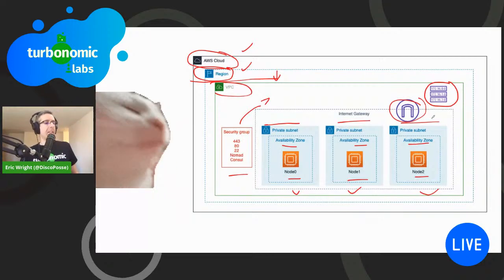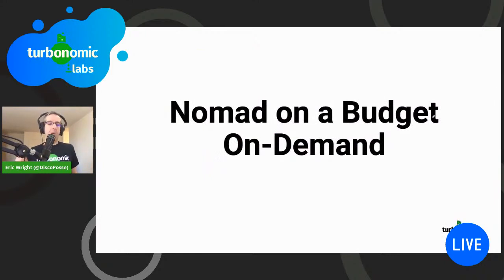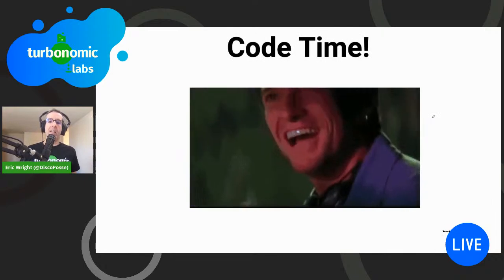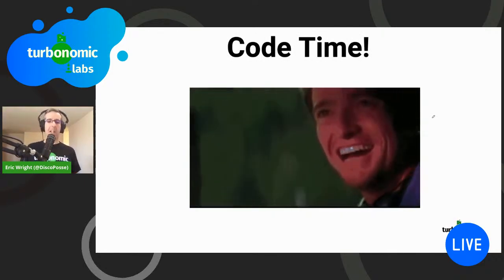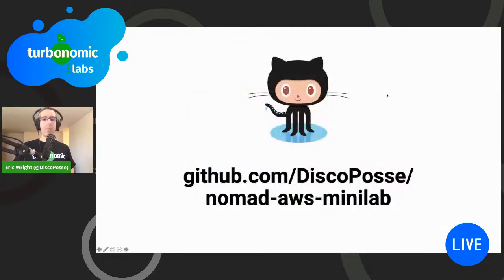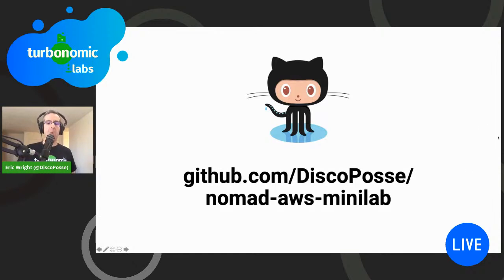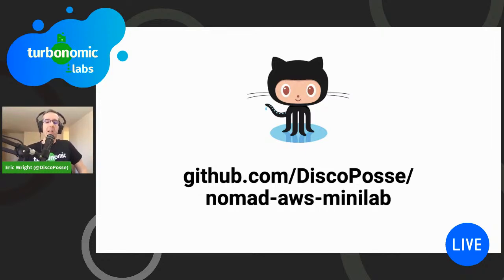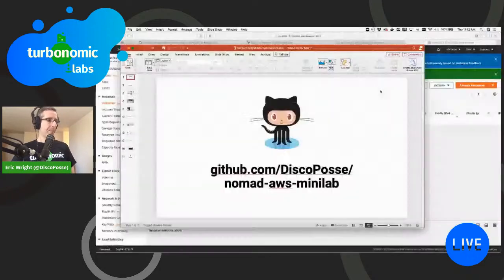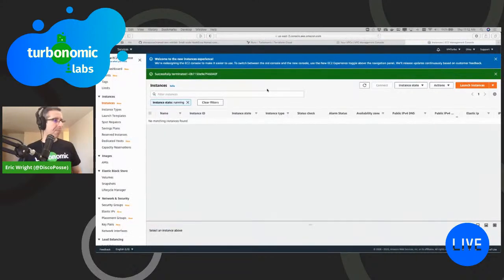So let's talk about doing it on a budget. I had to solve two specific problems: number one, how do I do it on a budget? Number two, how do I do it on demand so I can spin it up and tear it down at any point? Without further ado, no more presentations — let's jump right in. You can go to github.com/discoposse and find the Nomad AWS Mini Lab. I'm also going to take this recording and put it into the README so you can see what's going on.